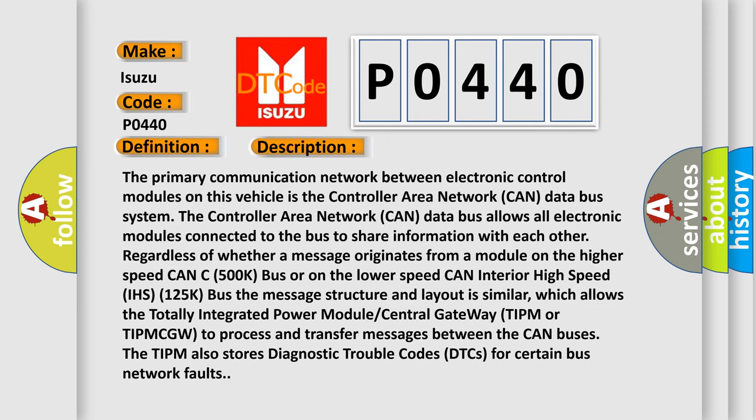The primary communication network between electronic control modules on this vehicle is the Controller Area Network (CAN) data bus system. The CAN data bus allows all electronic modules connected to the bus to share information with each other, regardless of whether a message originates from a module on the higher speed CAN C 500K bus or on the lower speed CAN Interior High Speed (IHS) 125K bus. The message structure and layout is similar, which allows the Totally Integrated Power Module central gateway (TIPM/TIPMCGW) to process and transfer messages between CAN buses. The TIPM also stores diagnostic trouble codes (DTCs) for certain bus network faults.